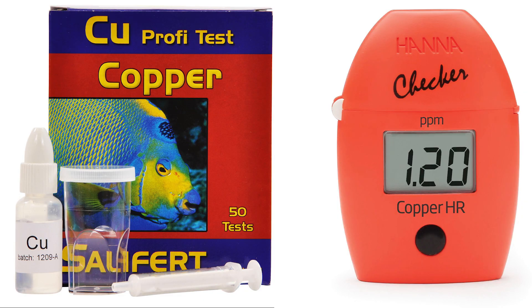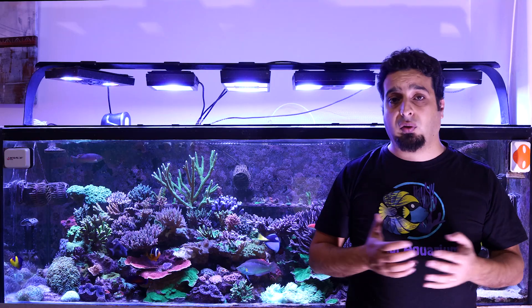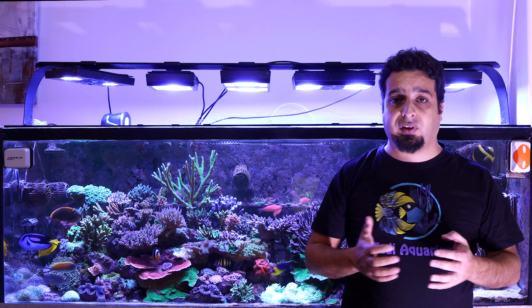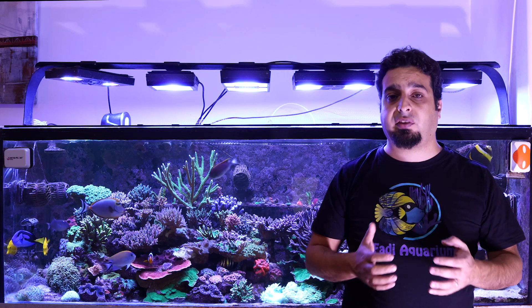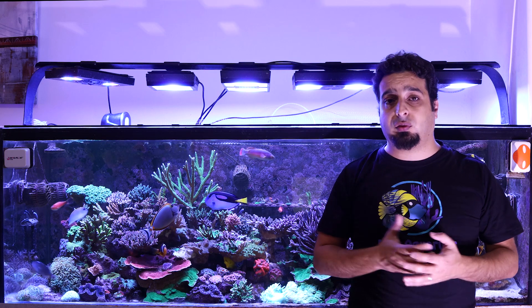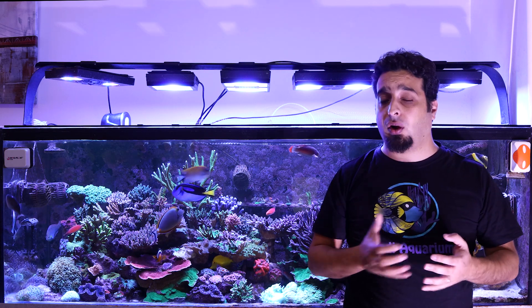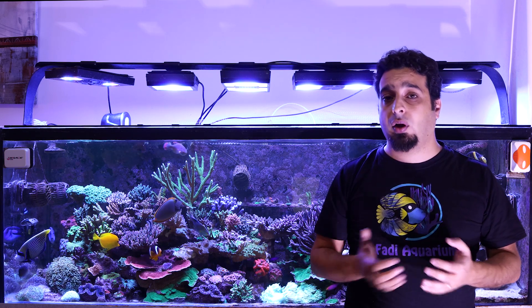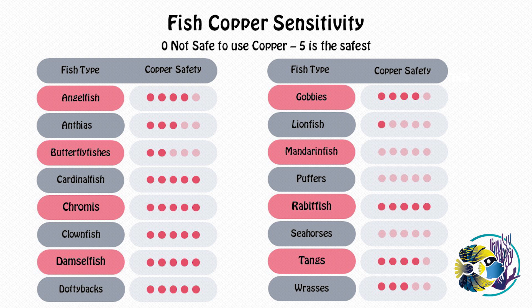So you will need a copper test kit like Salifert or Hanna. Some kinds of fish cannot tolerate copper, like lionfish, dragonets, and a few others. So before treating with copper, do your homework and research if that fish is copper safe. If you want to treat copper-sensitive fish for ich or velvet you will need to find another way, like the tank transfer method or Polyplab Medic. Here is a table of the most common types of fish and their copper compatibility from 0 to 5, where 0 means the fish will not tolerate copper at all and 5 means the fish will do well when treated with copper.